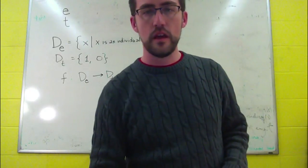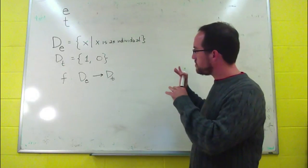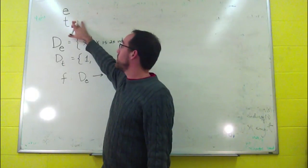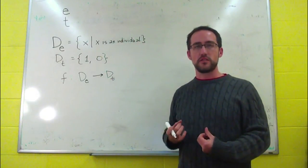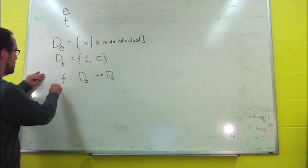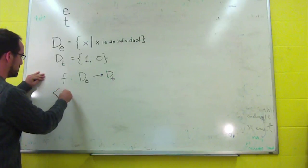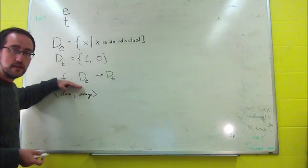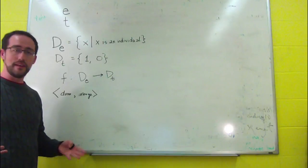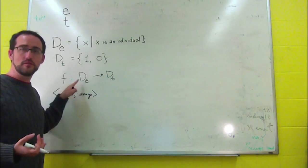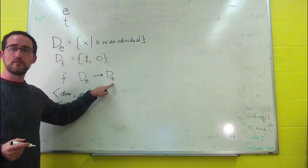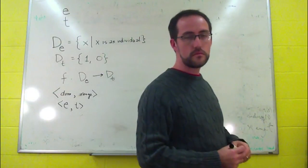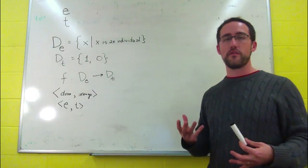Type E to type T. And we can characterize the function by its type as well. So individuals are of type E — they're entities. Truth values are of type T. But functions have types as well, and the types are essentially an ordered pair of the type of its domain and the type of its range. For instance, our functions that we've seen: a verb like 'fall' — its domain is of type E, so anything in its domain is an individual or an entity. And anything in its range is a truth value, 1 or 0. So we end up with ET, and that's an ordered pair.